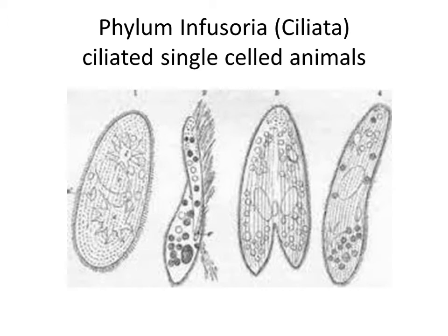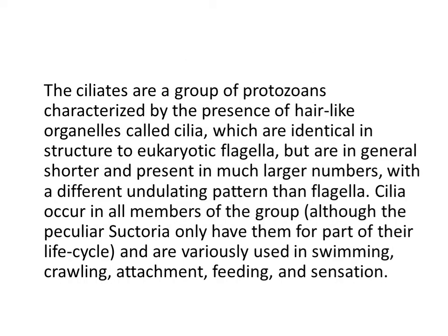Paramecium caudatum is a representative of Infusorias — the species I gave as an example, the prey of the amoeba. The ciliates are a group of protozoans characterized by the presence of hair-like organelles called cilia, which are identical in structure to eukaryotic flagella, but are in general shorter and present in much larger numbers with a different undulating pattern than flagella.